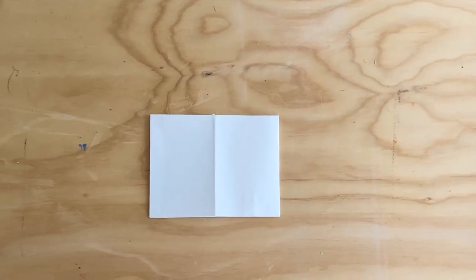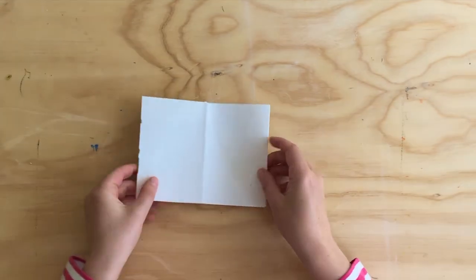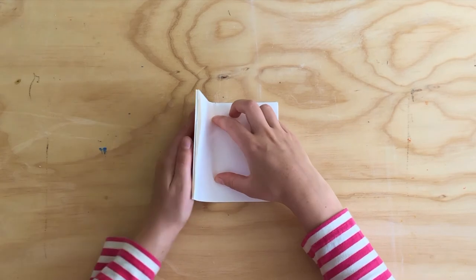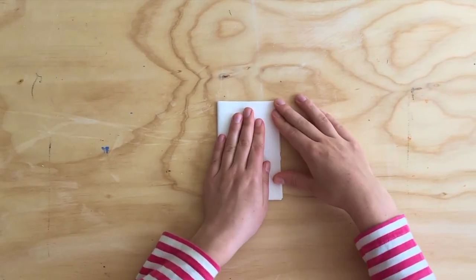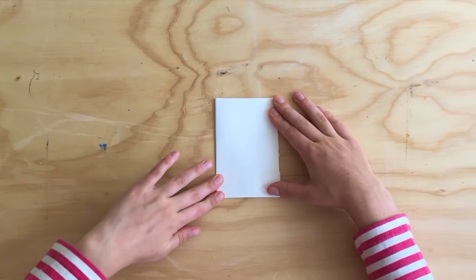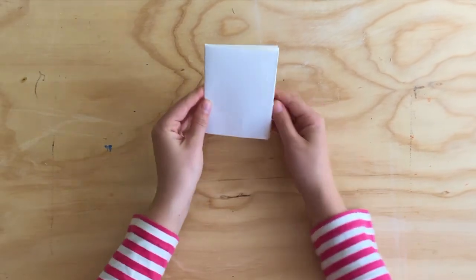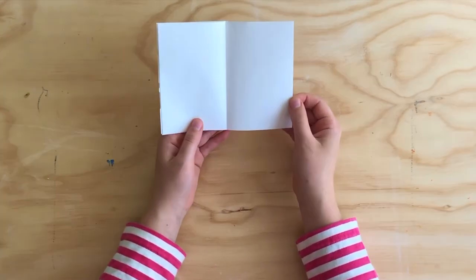Now for our final step, we're going to do one more hamburger fold to close the book. So the two short ends come to meet. It's just like closing an actual book. And then I'm gonna crease the edge, and there we go. We made a whole book with just one piece of paper.